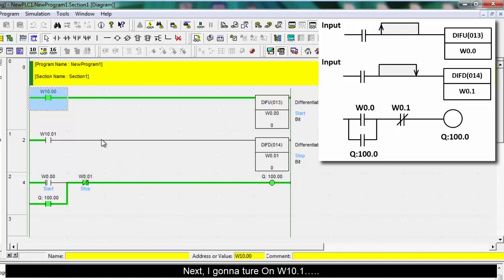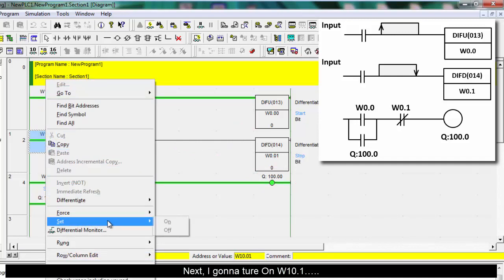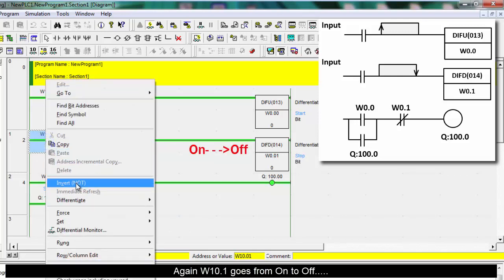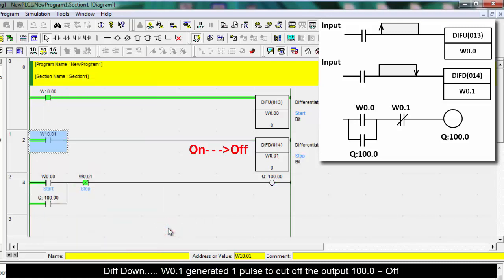Next, I'm gonna turn on W10.1. DIFD still not working. Again, W10.1 goes from on to off. DIFD, the bit 0.1, generates one pulse to cut off the output 100.0.